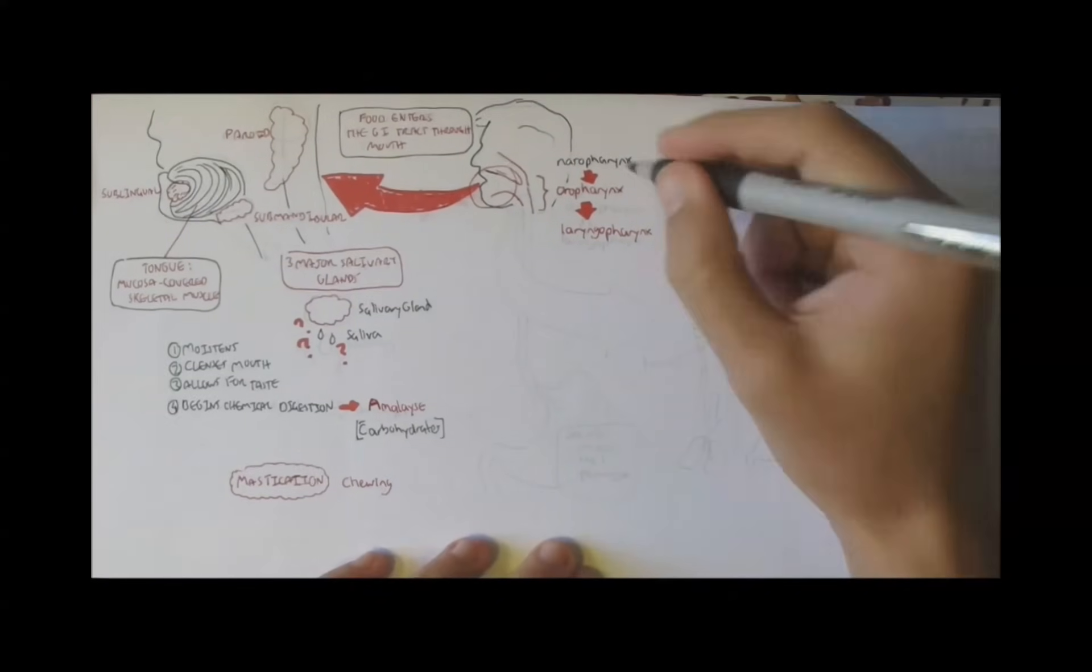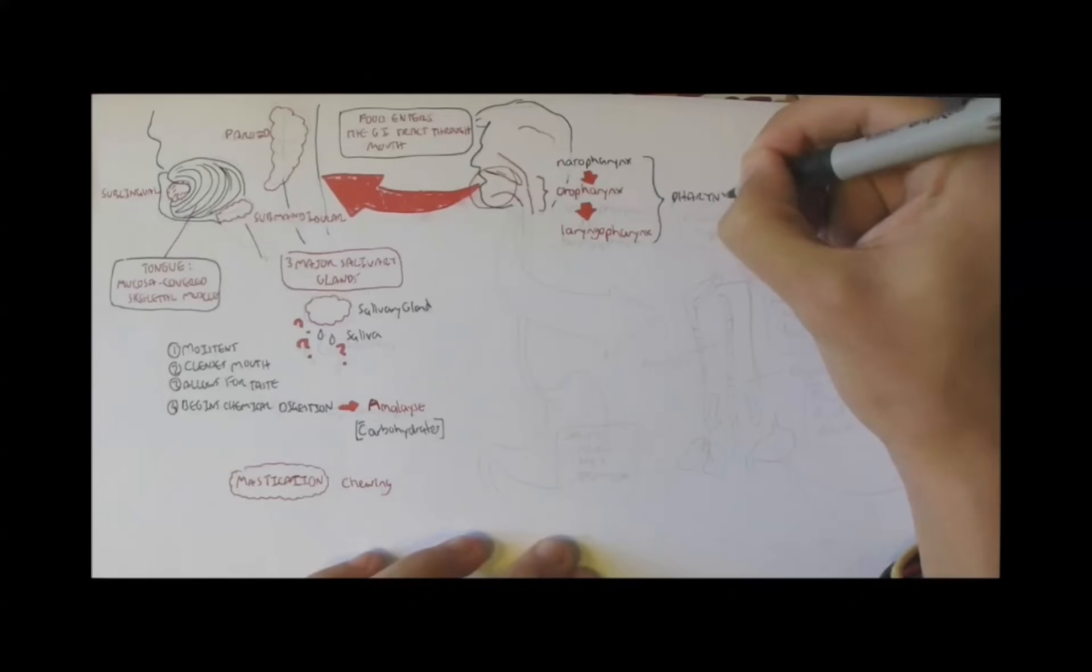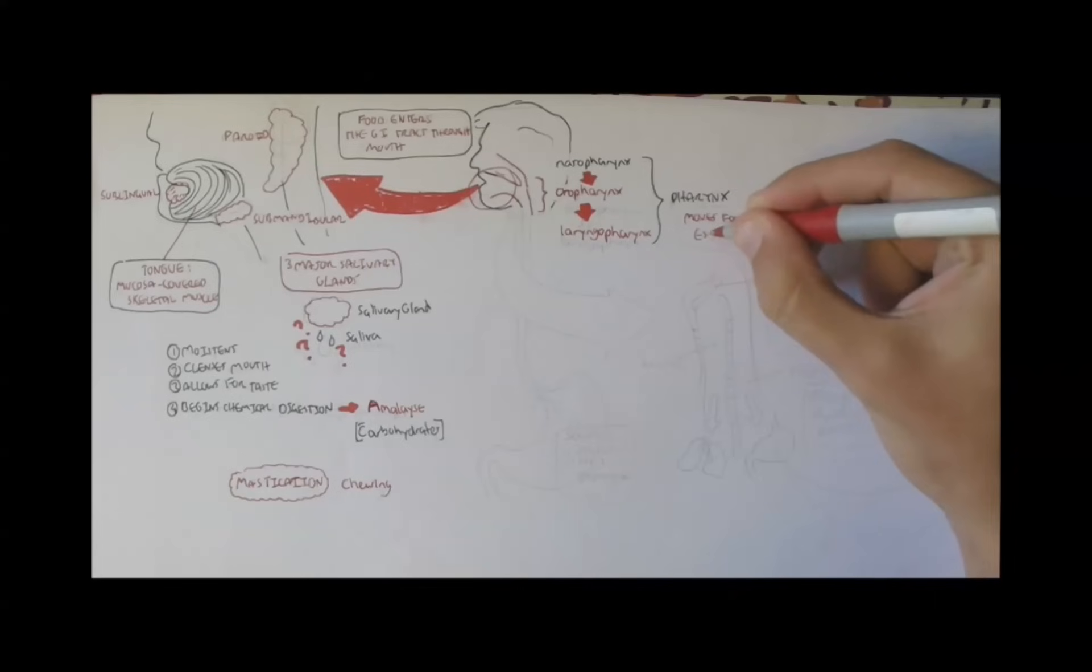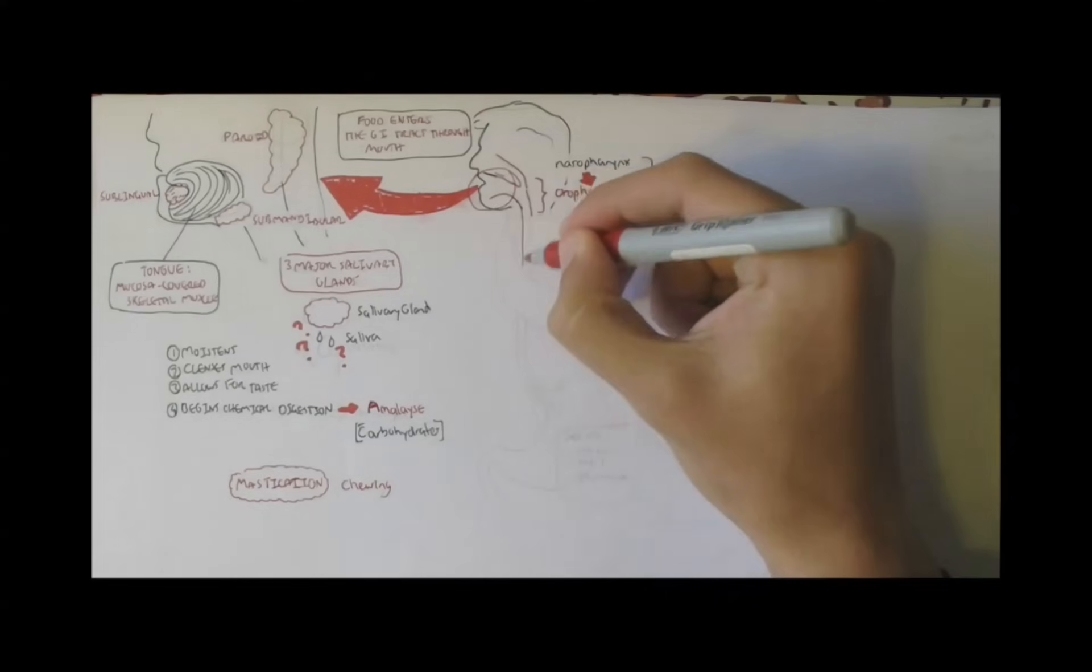And basically all these three regions, the nasopharynx, oropharynx, and laryngopharynx, they comprise the pharynx itself. And the pharynx's role in the digestive system is to propel food towards the esophagus. And it also secretes mucus.